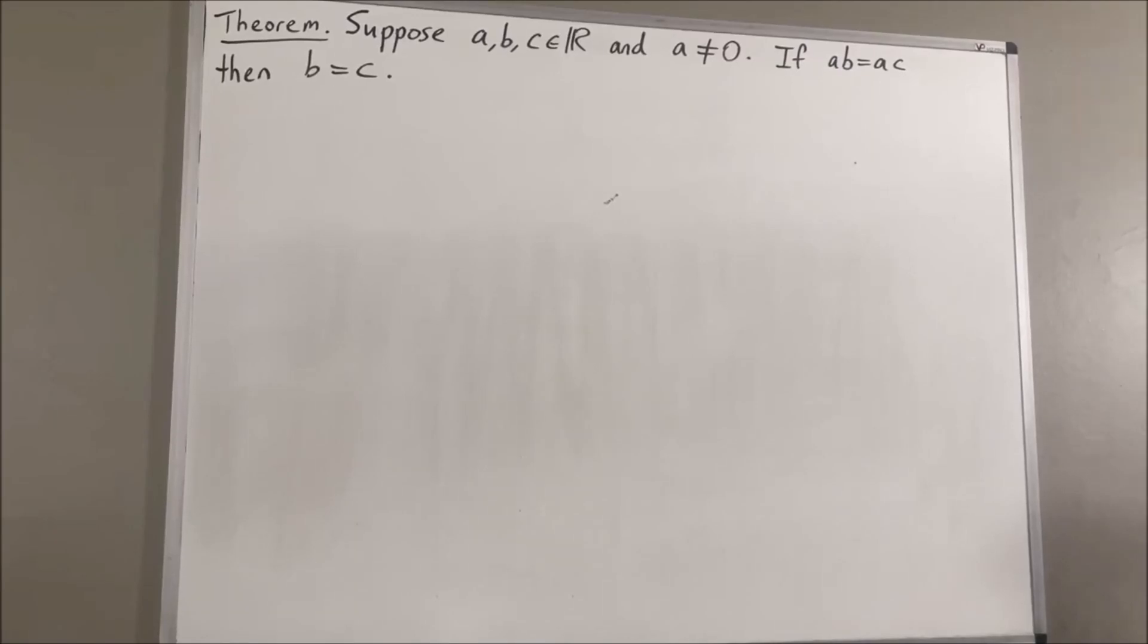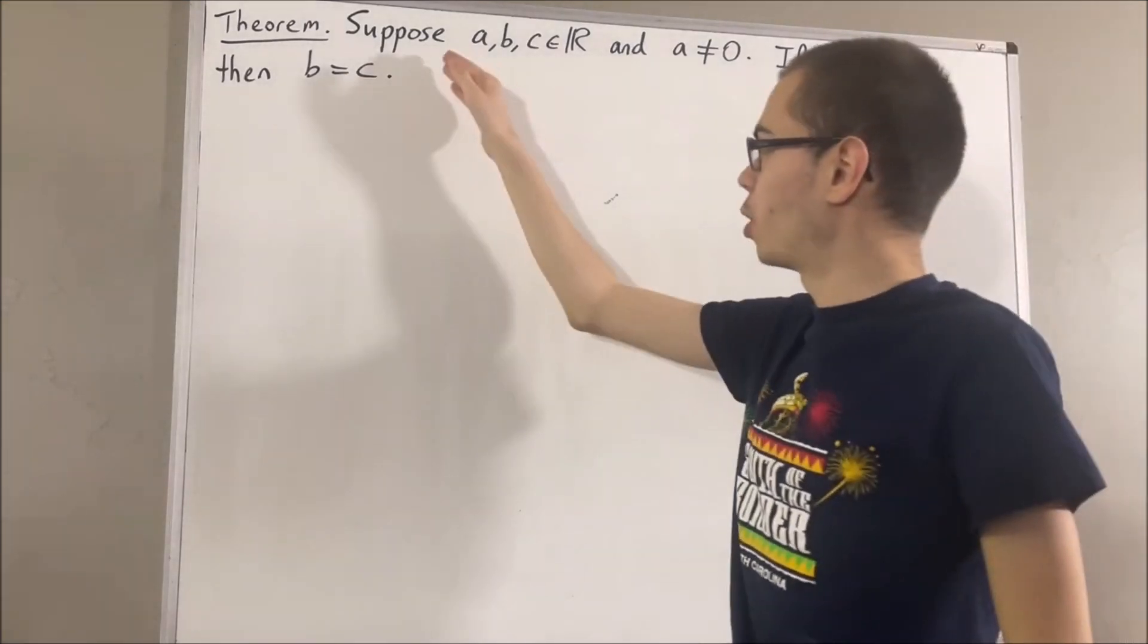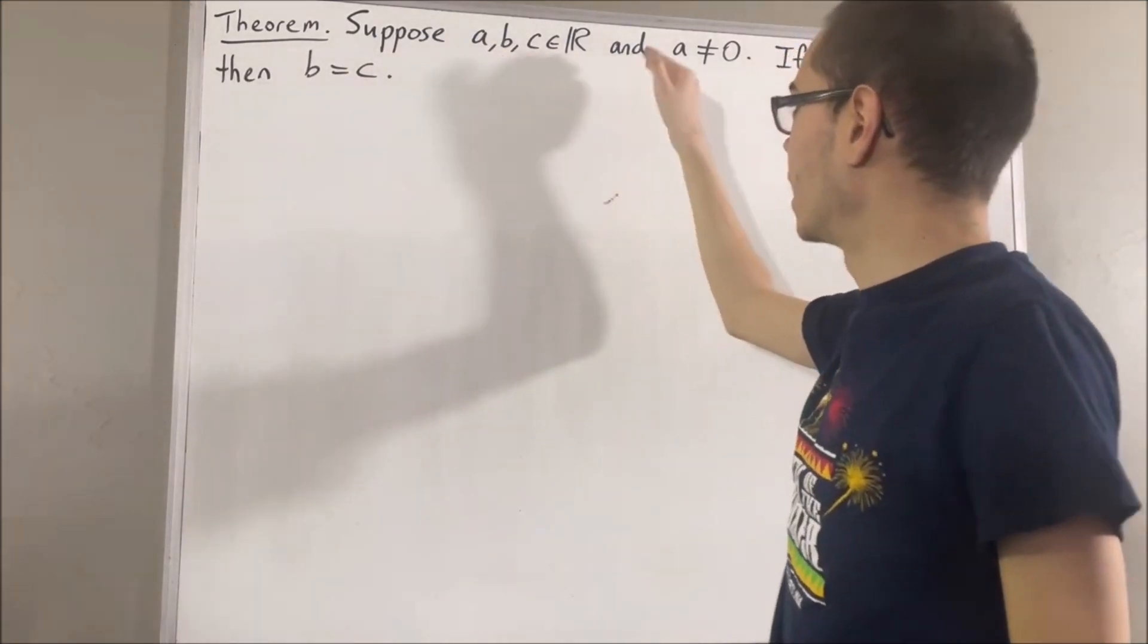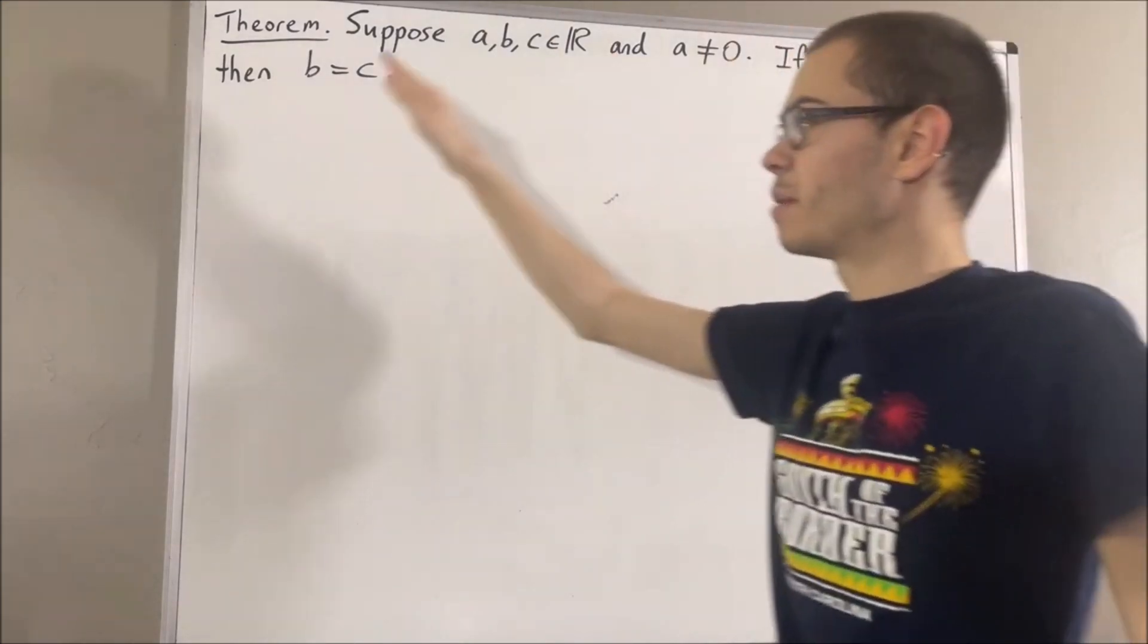Hello! In this video, we are going to prove the following theorem. Suppose A, B, and C are real numbers, and A is non-zero. If A times B is equal to A times C, then B is equal to C.